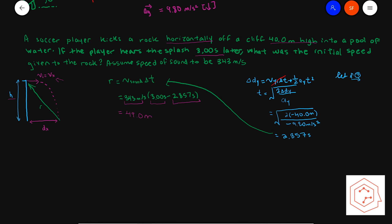Now we have to solve for the initial speed, which is just the speed in the x direction since the y direction had no initial speed. The initial speed in x equals distance in x divided by time. We can solve for the horizontal distance using the Pythagorean theorem: √(r² − h²) = √(49² − 40²) ≈ 28.3 meters. Substituting 28.3 meters divided by 2.857 seconds gives an initial speed of 9.91 meters per second.